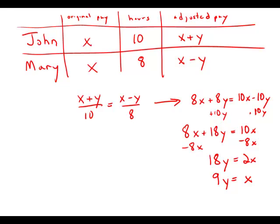So in other words, John's original pay X in terms of Y is 9Y and this is answer choice E.